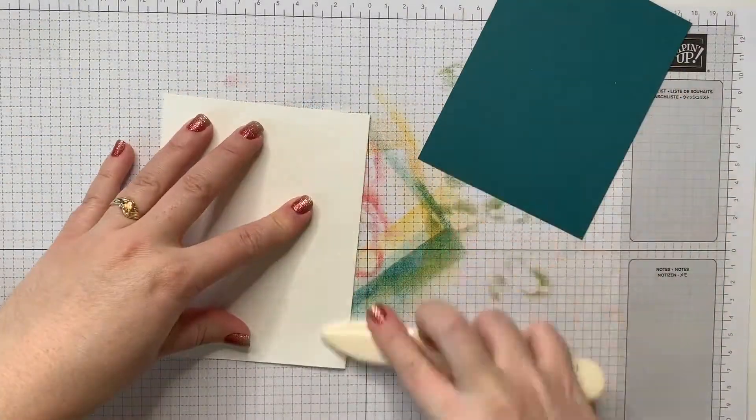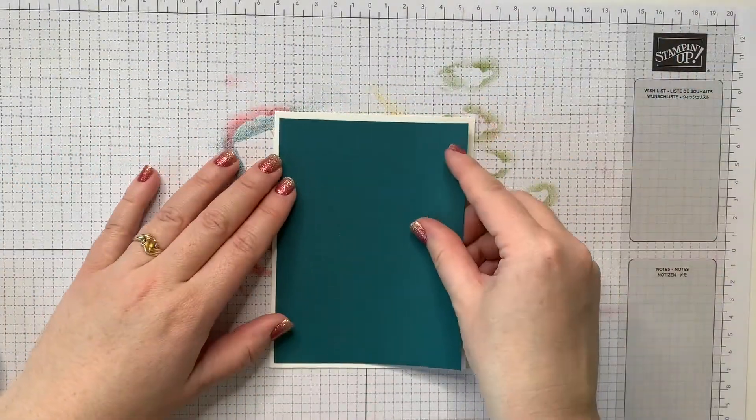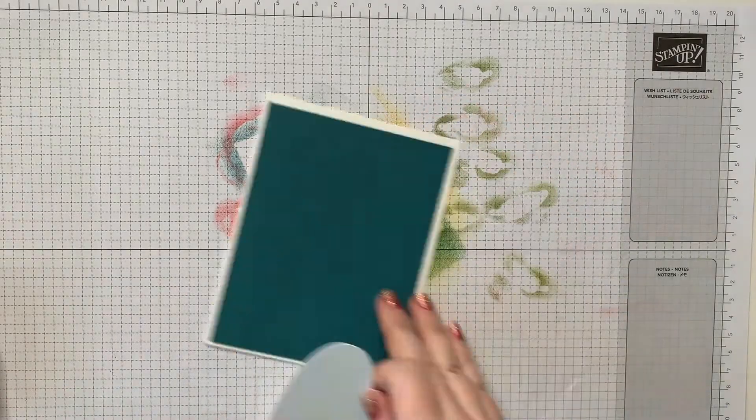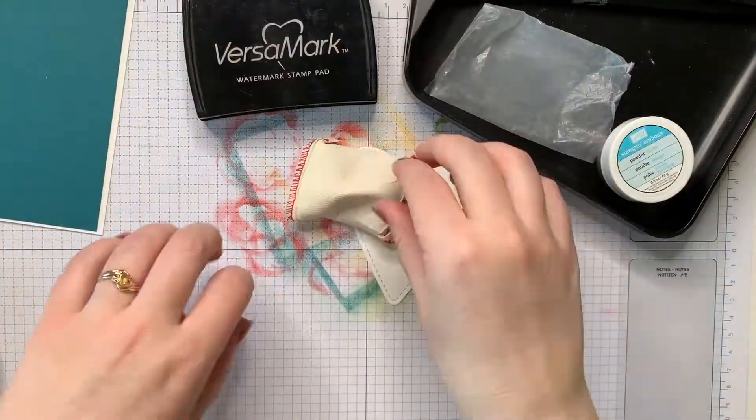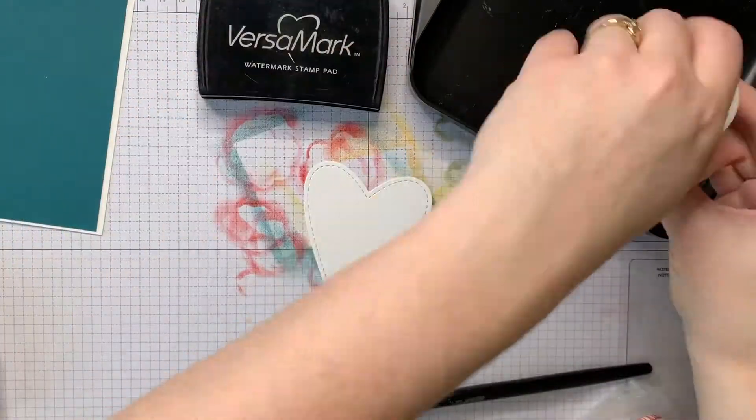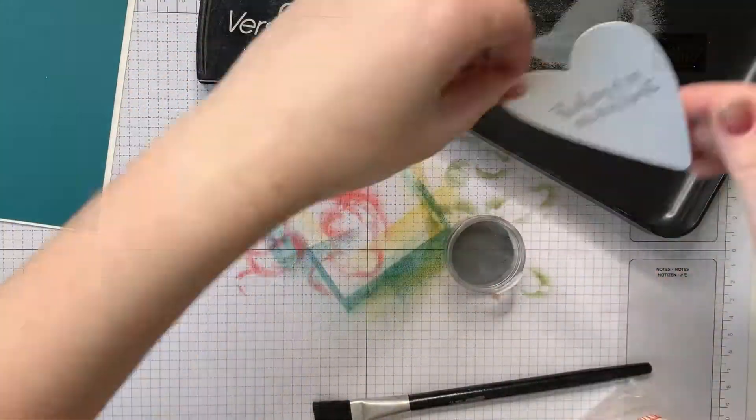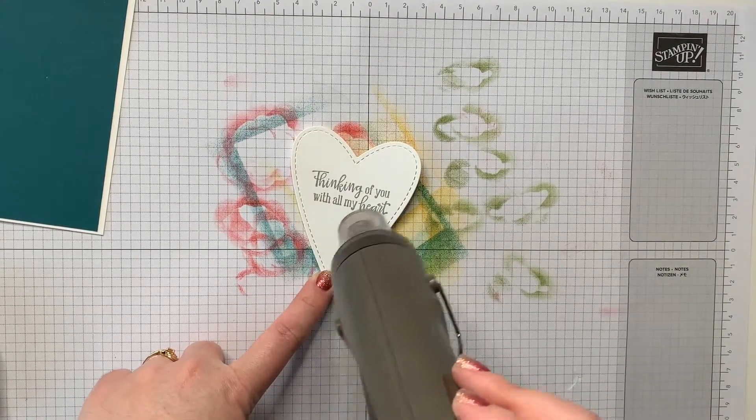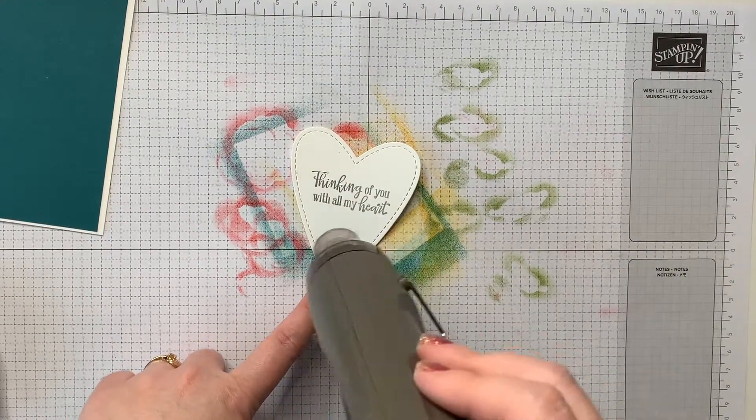And now onto the second card. I'm using quite a few pieces that I cut out from the first card. I have a pretty peacock card mat and then I'm using that stitched heart on top. I'm going to heat emboss the same sentiment on this heart with my silver embossing powder and my Versamark ink.